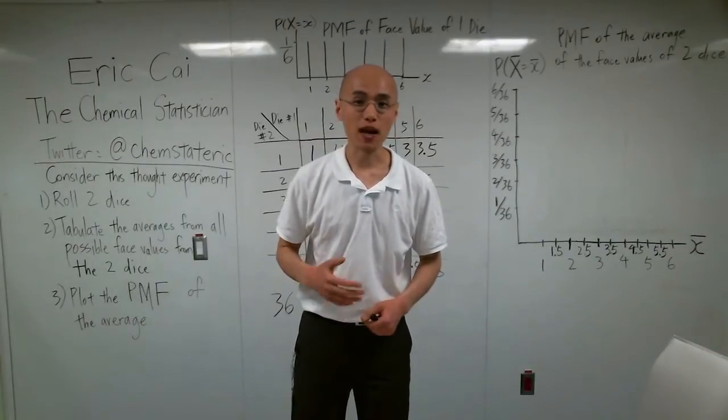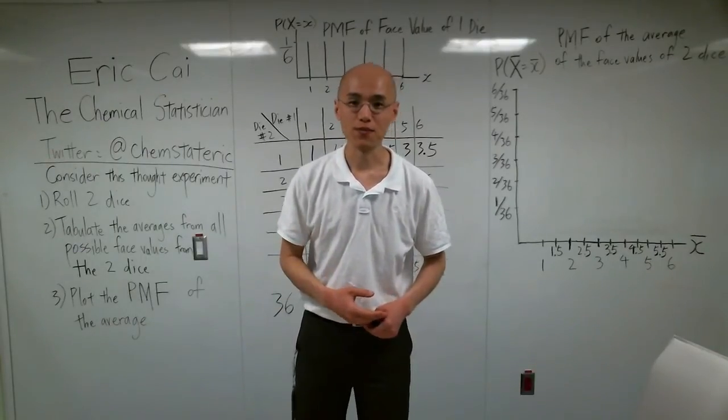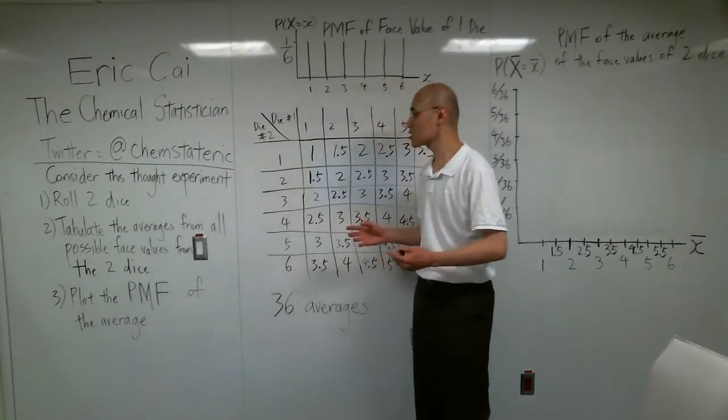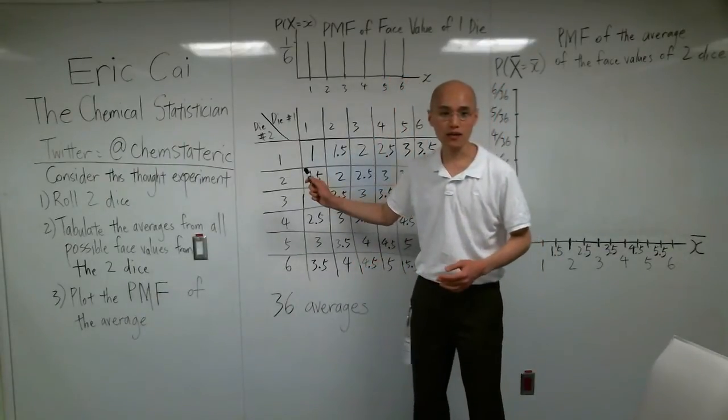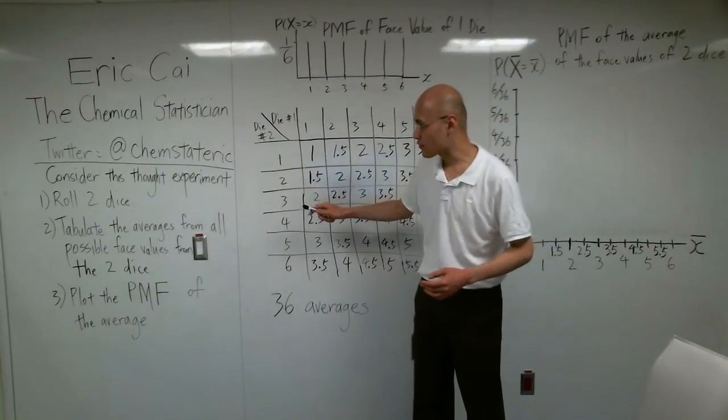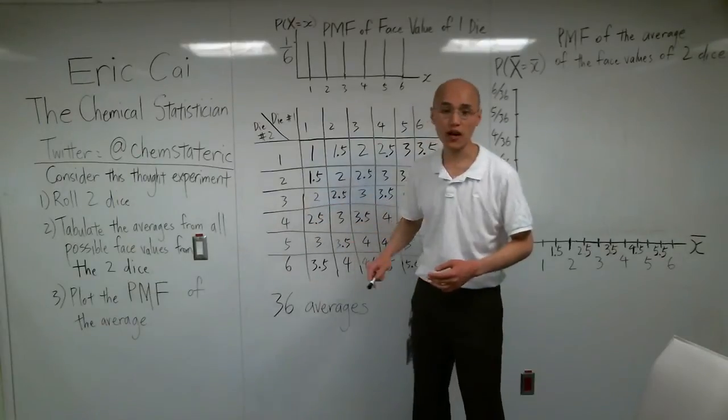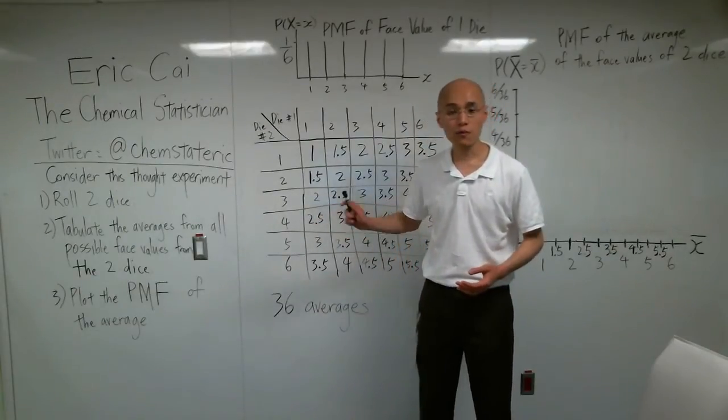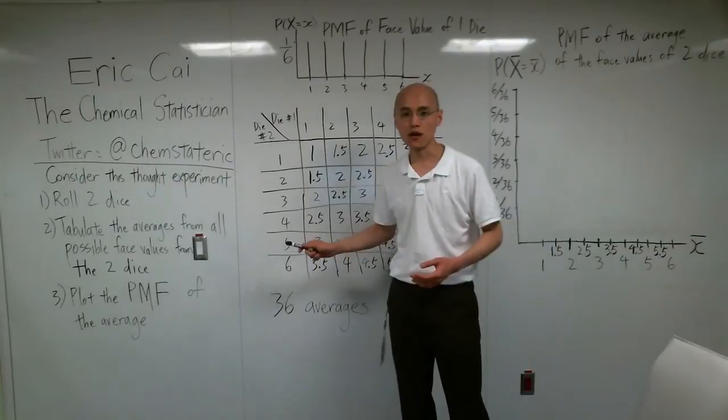This is a thought experiment that I'd like you to carry along with me. So, we're going to do this experiment by rolling two dice, we're going to tabulate the averages from all possible face values from the two dice, and then we're going to plot the probability mass function of the average.